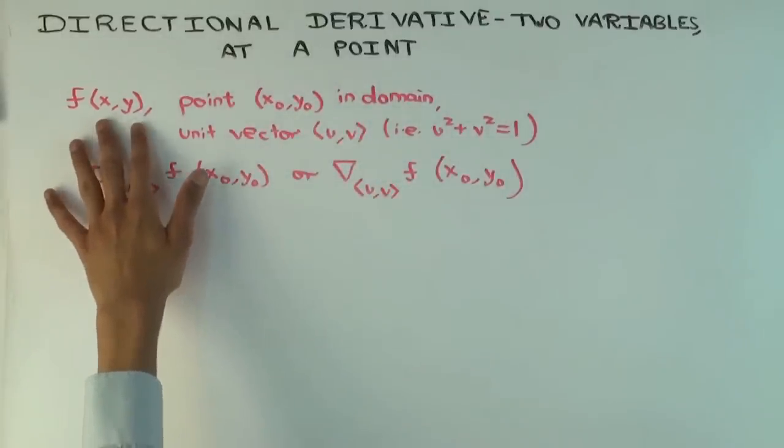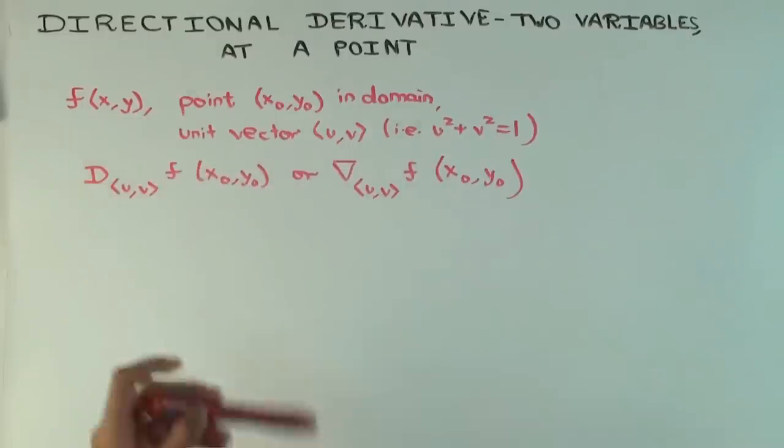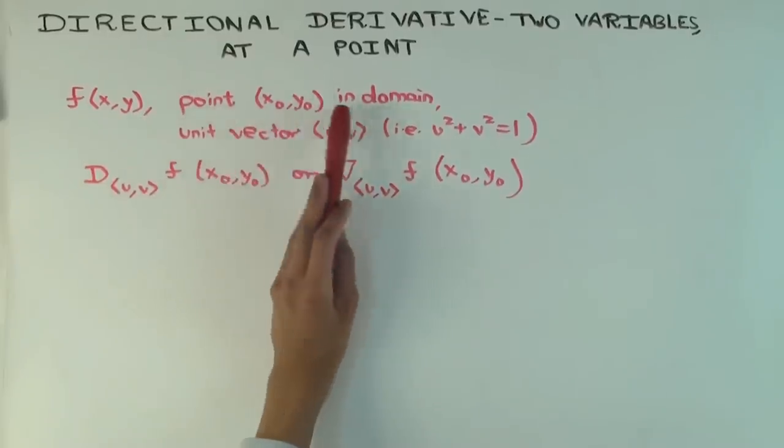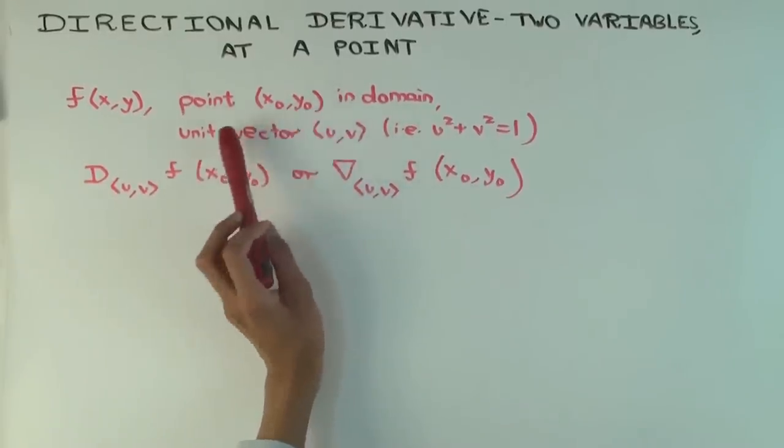So the function f of variables x and y, x₀ y₀ is a point in the domain, that's the point at which we'll be trying to calculate the derivative.